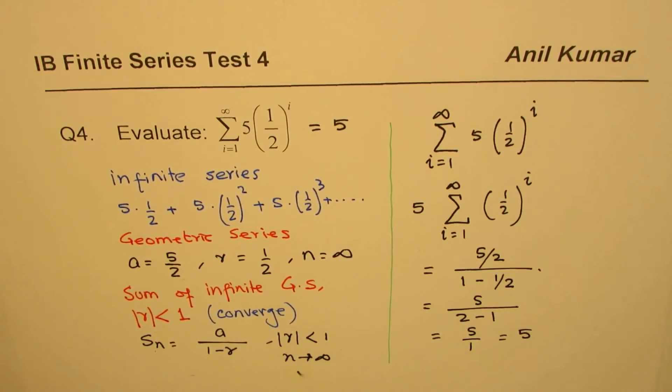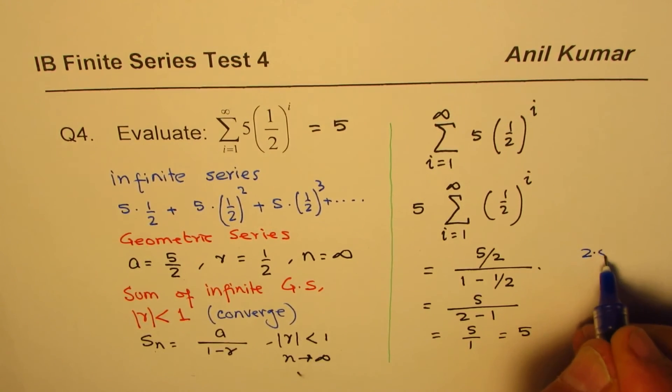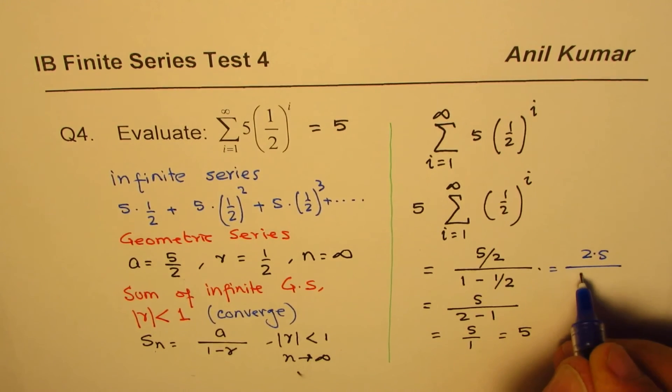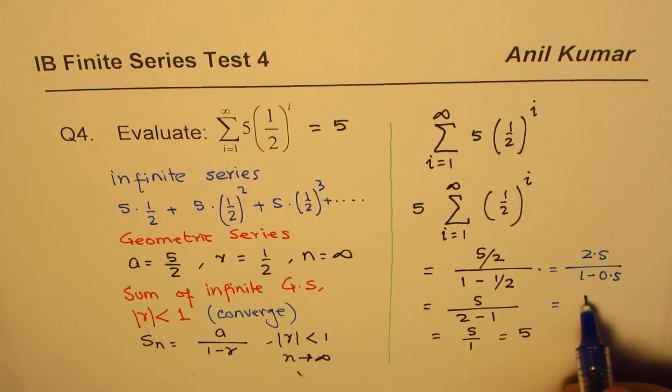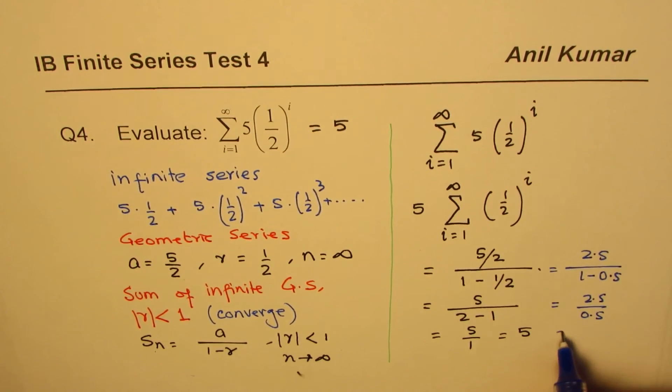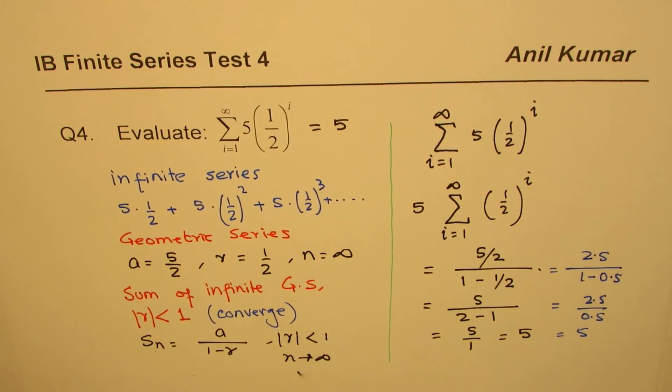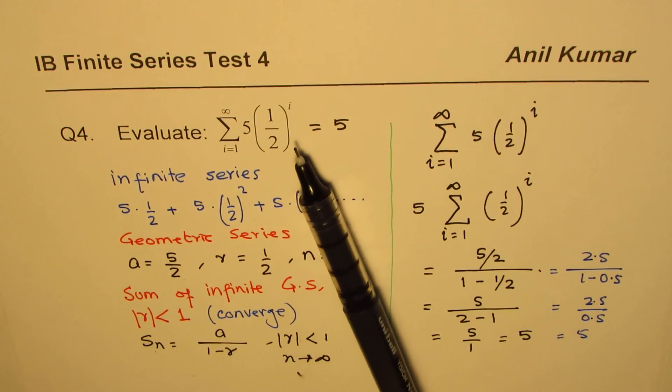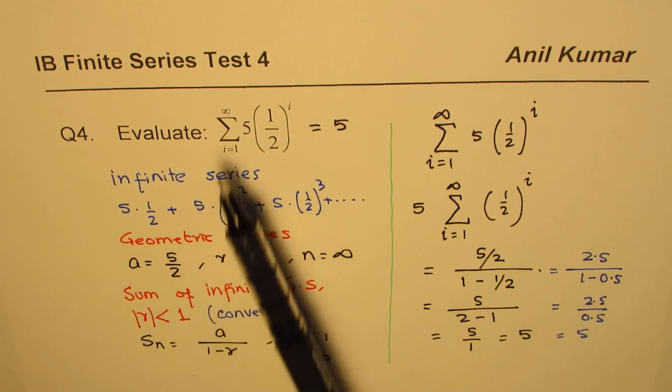You can use a calculator and solve. You can also write them in decimals. For example, you could do this as 2.5 over one minus 0.5, which is 2.5 divided by 0.5, which is five. You could do that also. All are these options, but it is important to understand that when you get a question, analyze.